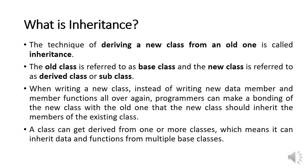If you want to use the data members and member functions of an existing class in a new class instead of rewriting them, the programmer can bond the new class with the existing class so the new class can access members of the existing class. This is called inheritance. It is also possible to derive a new class from more than one existing class, inheriting data and functions from multiple base classes.